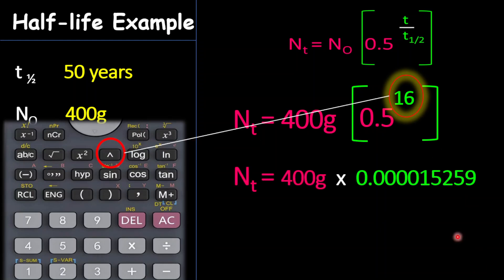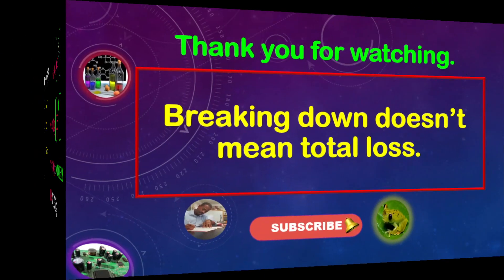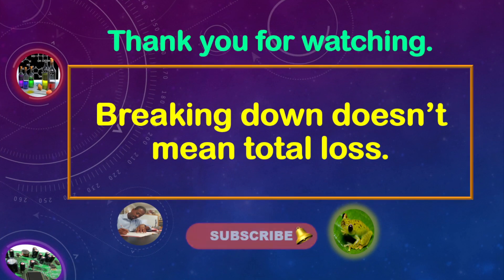And what you should get here is 0.000015259. And so 0.5 to the power of 16 equals this value. And then multiply by 400 grams, and then as a result of that, you should get 0.061 grams. And so after 800 years, the remaining amount of the sample is 0.061 grams. So I really hope this was useful for you and very helpful.